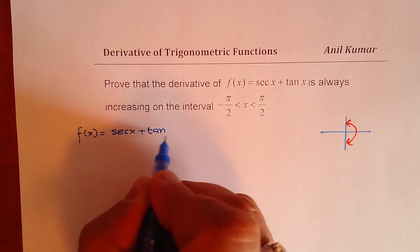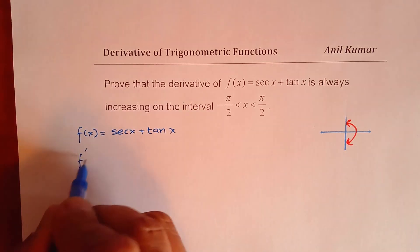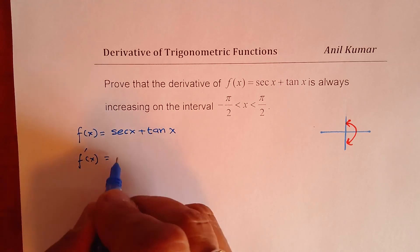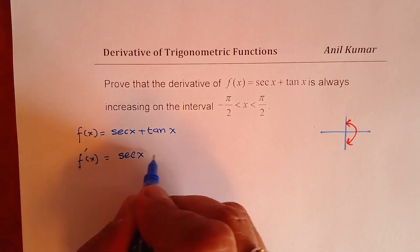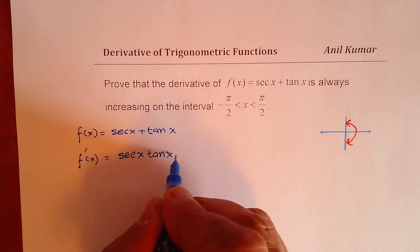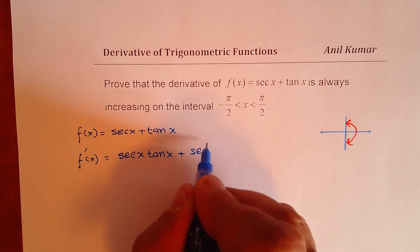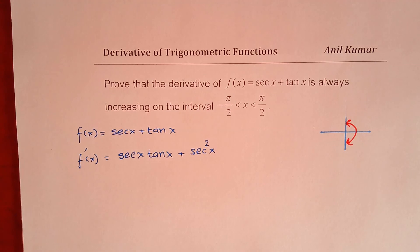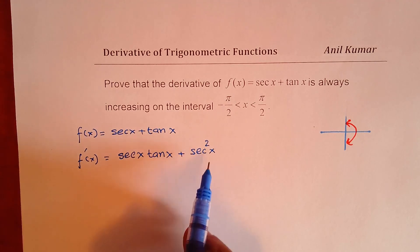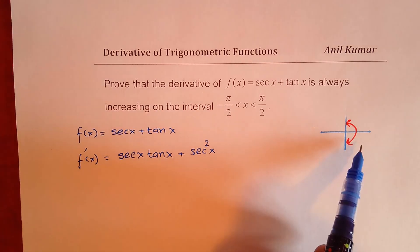Let us find the derivative of this function. The derivative of secant x is secant x tan x, and the derivative of tan x is secant squared x. Secant squared is always positive, but secant x times tan x — in quadrant 4, tan x could be negative.